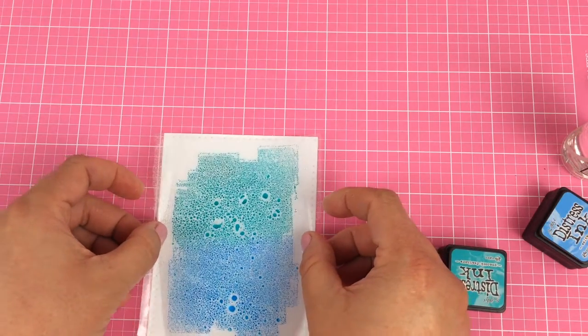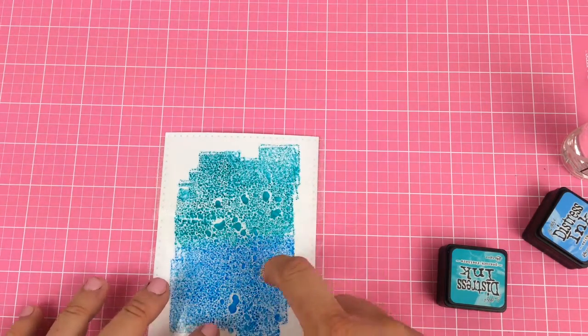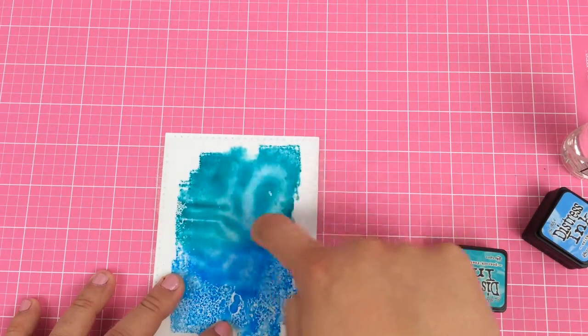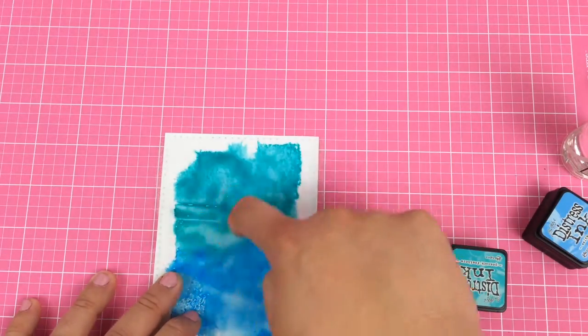I'm going to flip it over and press it onto the watercolor cardstock. Basically what you're going to do is use your fingernail and kind of go in circular motions.